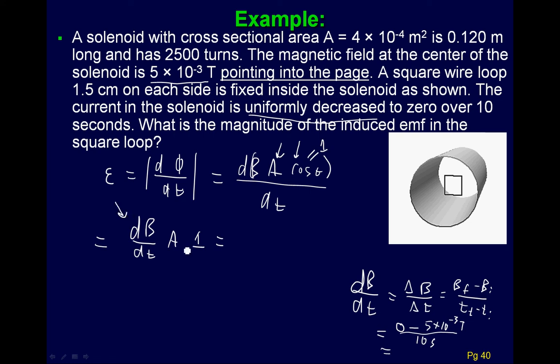Plug that in there. And then the area is the next part. The dB dt, we can plug that in. And the area is going to be just the length of the square squared. So you have this little square.